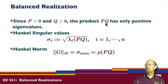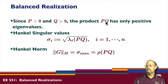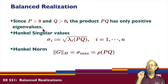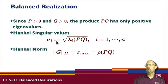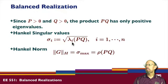Even though PQ is not symmetric, the eigenvalues of this product can be shown to be only real and positive — you can actually prove that, and it's not too difficult. So we can talk about something called the Hankel singular values. We talked previously about the Hankel norm. The Hankel singular values are the square roots of the eigenvalues of the product PQ.